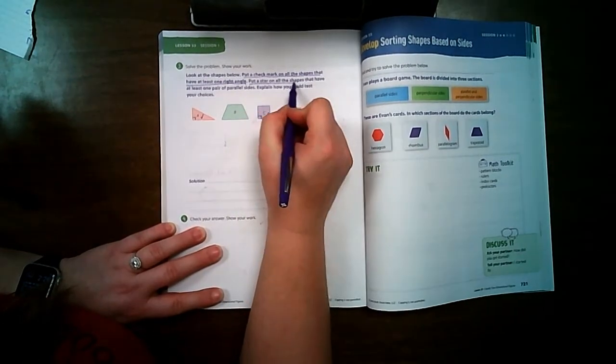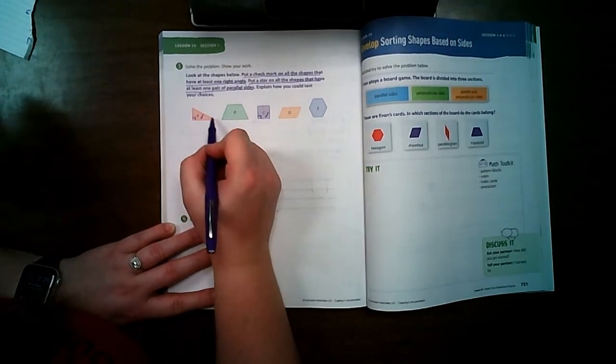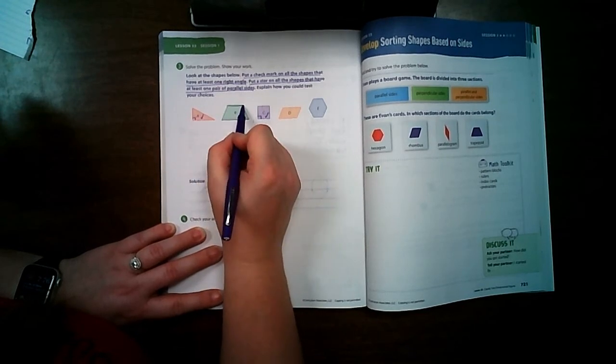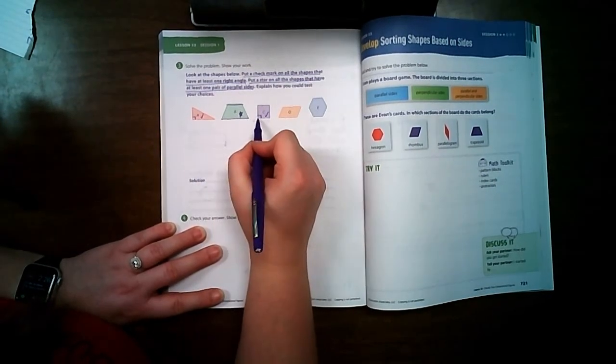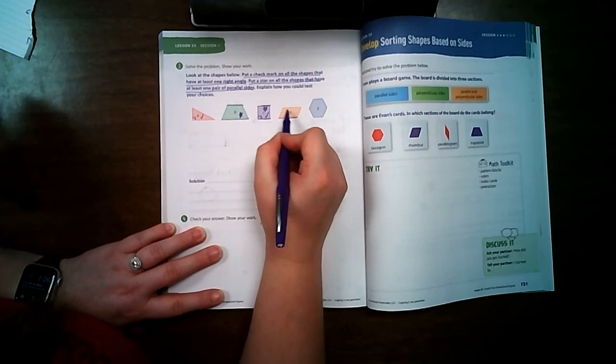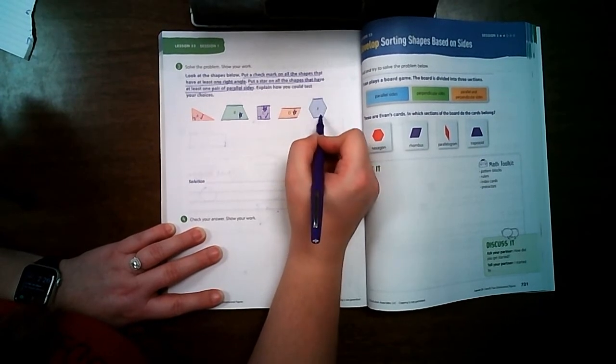Put a star on all the shapes that have at least one pair of parallel sides. Well, it only has three, so it can't have parallel. This and that are parallel. This and that are parallel. This and that are parallel. And this and that are parallel.